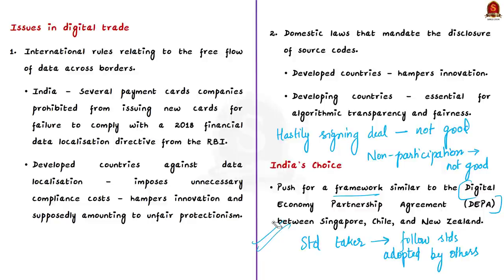In this discussion we saw how WTO works, its ministerial conferences and negotiations on digital trade, the JSI and how plurilateral negotiation differs from multilateral negotiation, why India is opposing the JSI on e-commerce, two key issues between developed and developing countries on digital trade, and the author's suggestion for India's way forward.